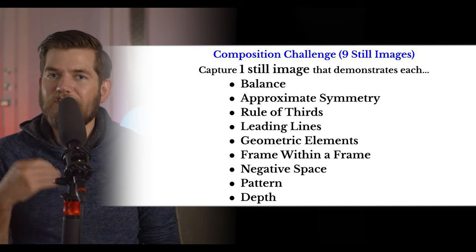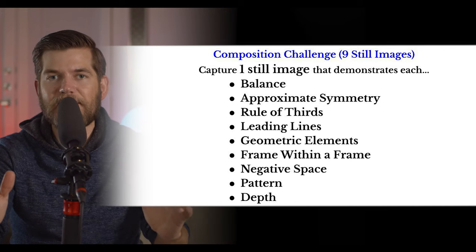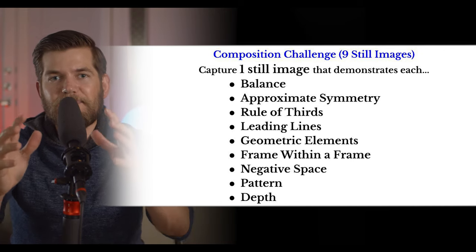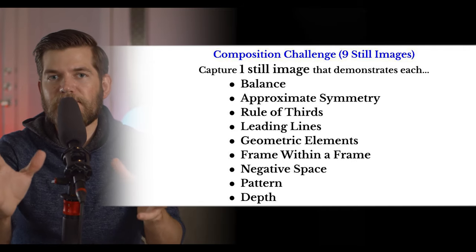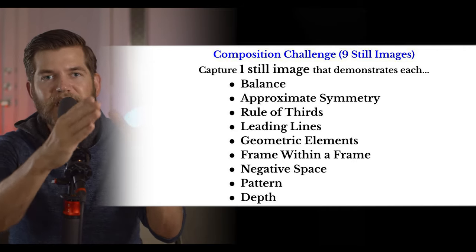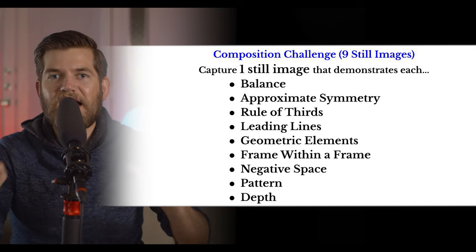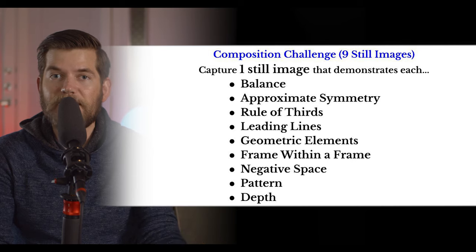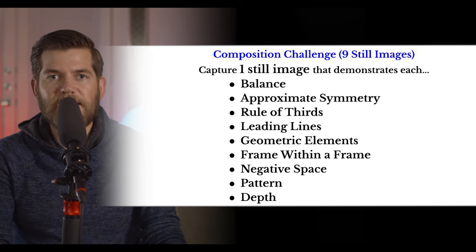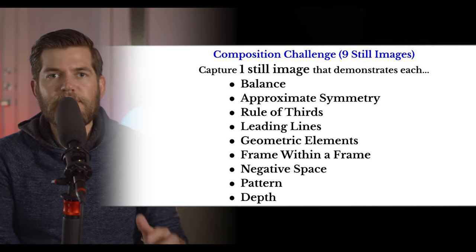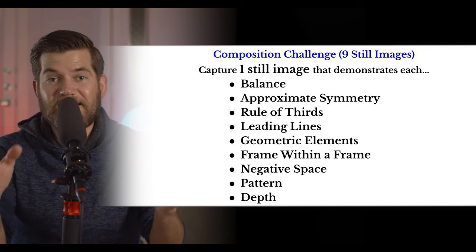Next, go out and find a pattern. Just like the negative space example, don't just take a picture of a pattern — place a subject inside of that pattern. That subject is an anomaly: something that stands out from everything else, the difference within the pattern that breaks it. Whether the subject is a person or a thing, make sure you place it inside a pattern that takes up most of the frame. Examples of patterns include carpet, wallpaper, bricks, and rows of chairs. The pattern should be most of the frame, and the subject should stand out inside of it.